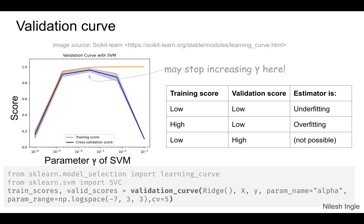The ways to do that are by using validation and learning curves. On the left hand side we have a validation curve where the classifier is SVM. Validation curves allow us to change one hyperparameter and then see how the score varies. Here we have the parameter gamma varying on the x-axis.